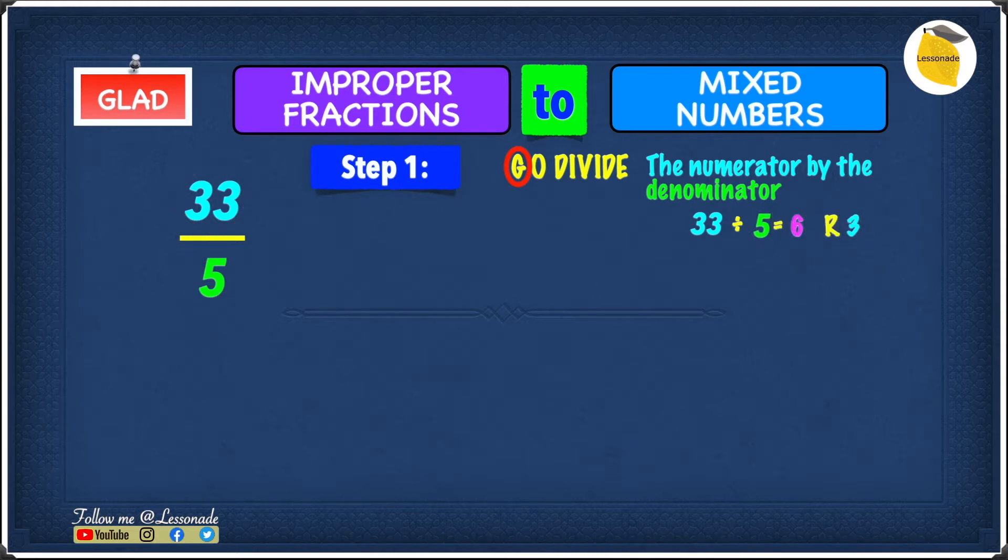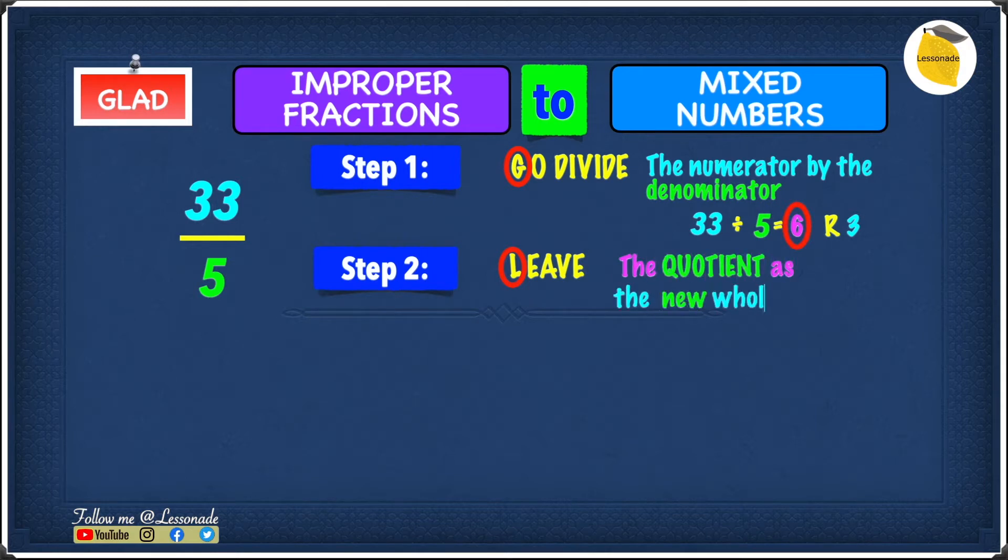Now let's move to step 2, and step 2 is L. L is leave the quotient, which is 6, as the new whole number. So this means the new whole number will be 6 since it's a quotient. Now we can write this 6 as a whole number.